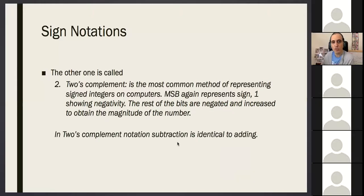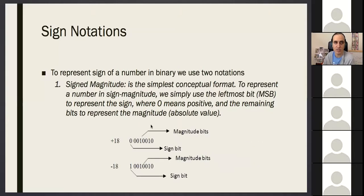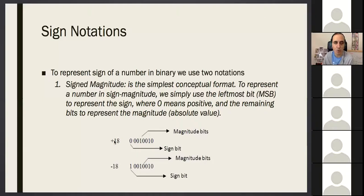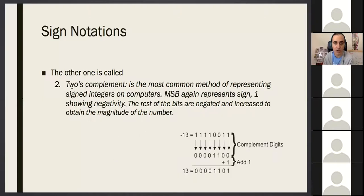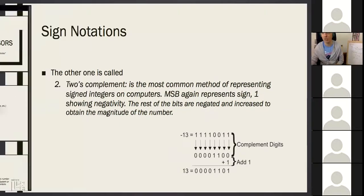The nice thing about two's complement notation is that subtraction is identical to addition — you just have negative and positive numbers. For example, in sign-magnitude if you want to sum a positive and negative number, you cannot add them directly; you have to detect the sign and do subtraction. However, in two's complement you can add them directly.